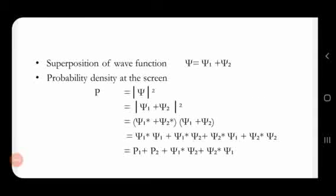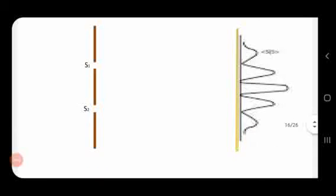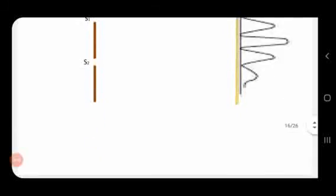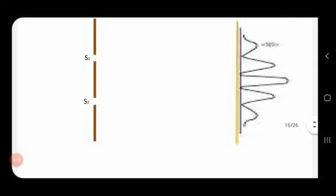If the last two cross terms ψ1*ψ2 and ψ2*ψ1 are absent, we would get P = P1 + P2, giving a simple additive distribution. But because of the contribution of these cross terms ψ1*ψ2 + ψ2*ψ1, we get an interference-type intensity distribution instead.